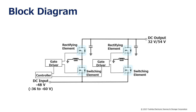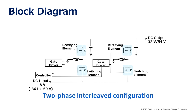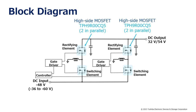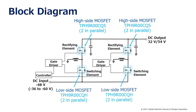This is the introduction of the block diagram. Synchronous rectification is used in this design, thus a MOSFET is used as the rectifying element. A two-phase interleaved configuration is used, and two 150-volt MOSFETs are arranged in parallel to allow high current. In this configuration, the high-side MOSFETs as rectifying elements require high-speed reverse recovery operation, thus TPH9R00CQ5 MOSFET with a high-speed built-in diode is used. The low-side MOSFETs as switching elements don't require high-speed reverse recovery operation, thus TPH9R00CQH with a normal diode is used.